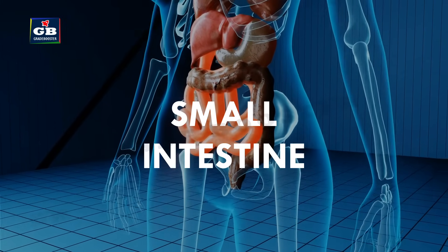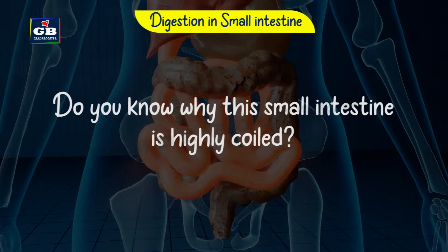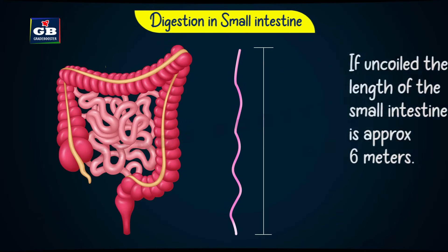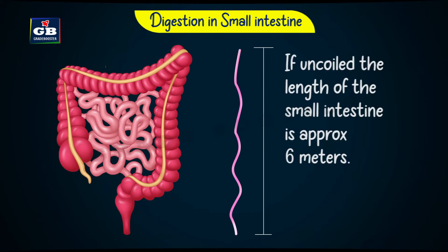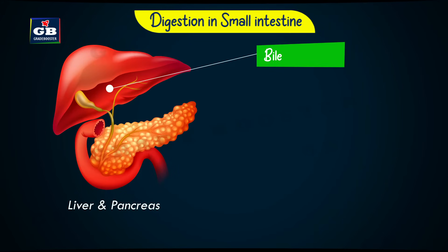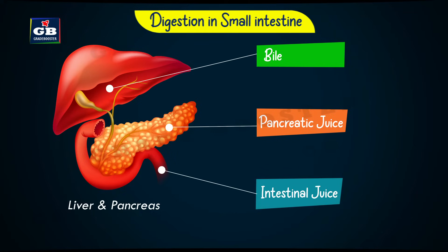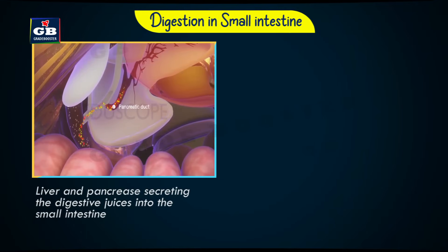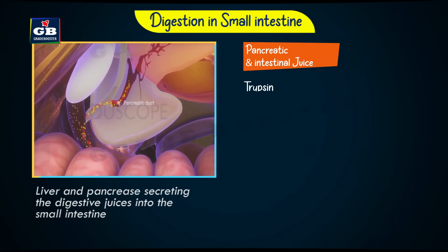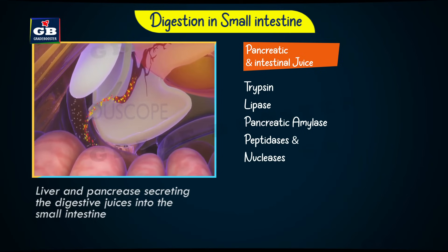The small intestine is a long, coiled tube. It is highly coiled to fit in a small space. The small intestine receives bile juice from the liver, pancreatic juice from the pancreas, and intestinal juice from the walls of the small intestine. Pancreatic and intestinal juices contain enzymes like trypsin, lipase, pancreatic amylase, peptidases, and nucleases.